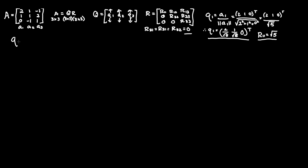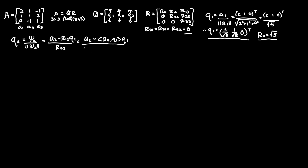Now let's move on to Q2. This equals a variable I'm calling psi2 over the magnitude of psi2, which is A2 minus R12 times Q1, all over R22. This is effectively A2 minus the inner product of A2 and Q1, times Q1, over its magnitude — basically the projection of the vector. So before we can find psi2, we need to find what R12 is — it's just the inner product of A2 and Q1.